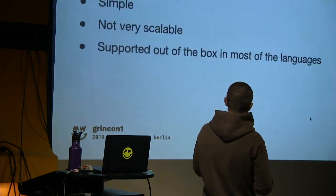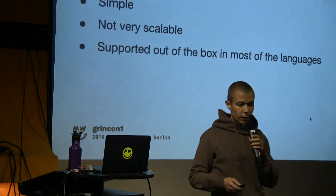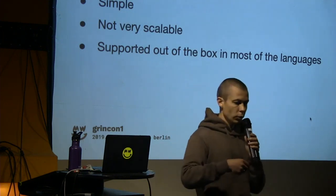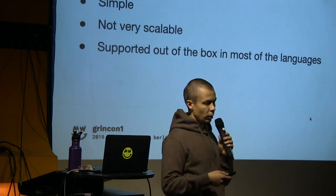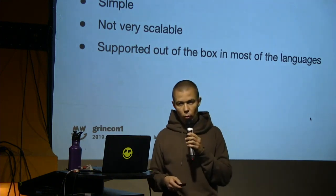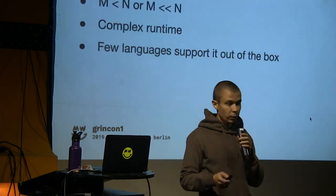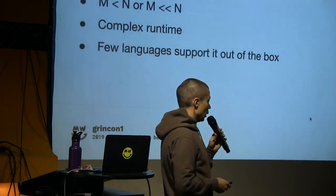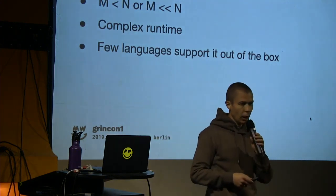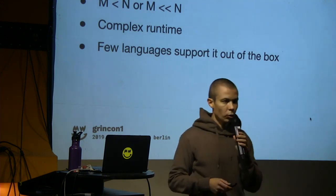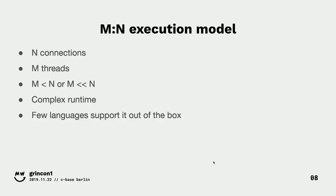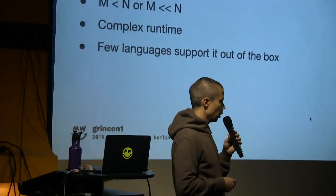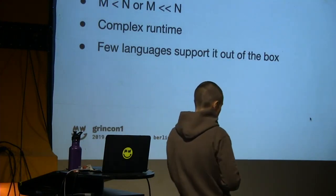We have different execution models. The simplest one is N:N — we have N peers, N threads, and we execute each peer in a separate thread. It's pretty simple, but we can spend a lot of CPU resources because thread context switches are not that cheap. Another model uses a smaller number of threads, usually matching the number of CPU cores, so we can scale much better. But we need to do some multiplexing, which creates a much more complex structure. Very few languages actually support this out of the box — Rust doesn't.